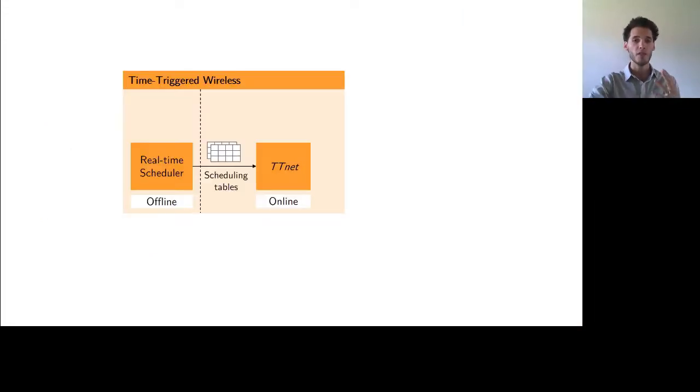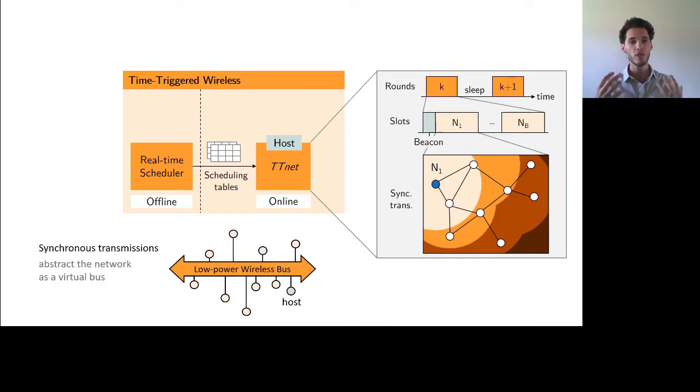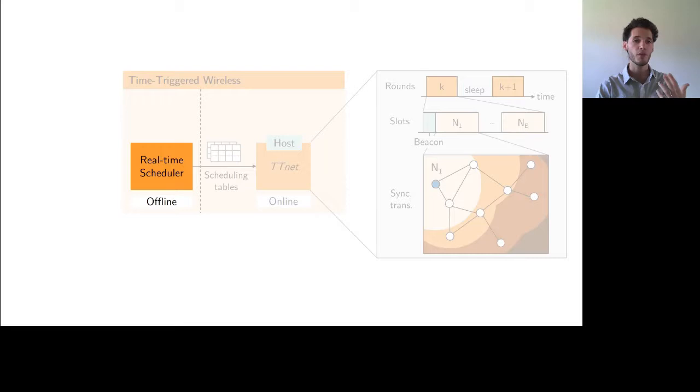So to summarize on the TTNet, the key thing to take away is that the use of this technique called synchronous transmission allows us to abstract away the complexity of multi-hop communication and schedule everything as if the network was in fact a shared bus. This is a very interesting property that we'll try to leverage in our real-time scheduler.